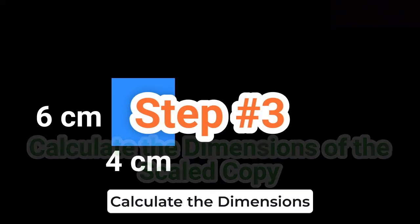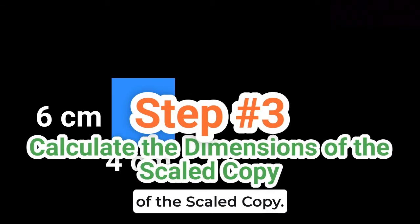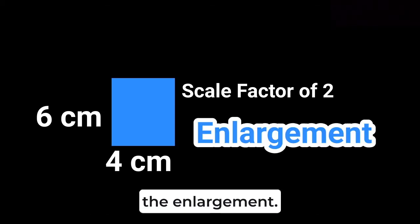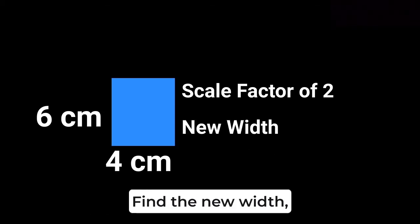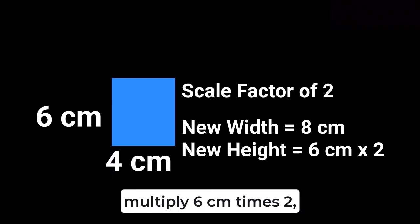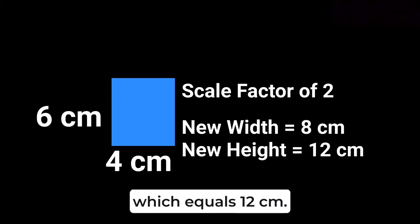Step three, calculate the dimensions of the scaled copy. First, let's do the scale factor of two, the enlargement. Find the new width: multiply four centimeters times two, which equals eight centimeters. Find the new height: multiply six centimeters times two, which equals 12 centimeters.